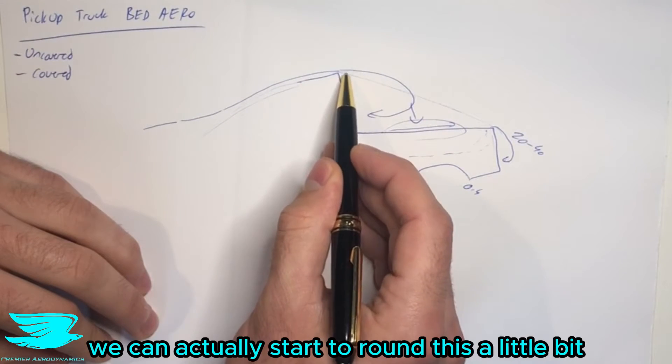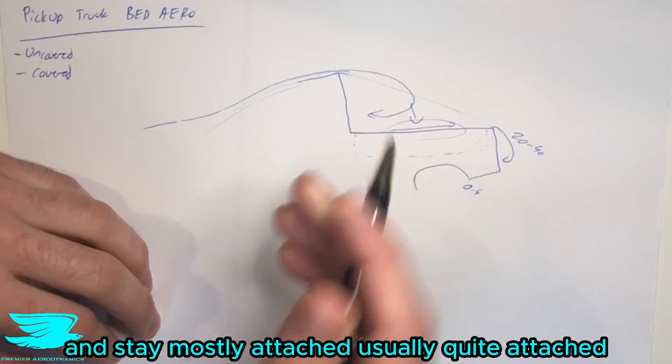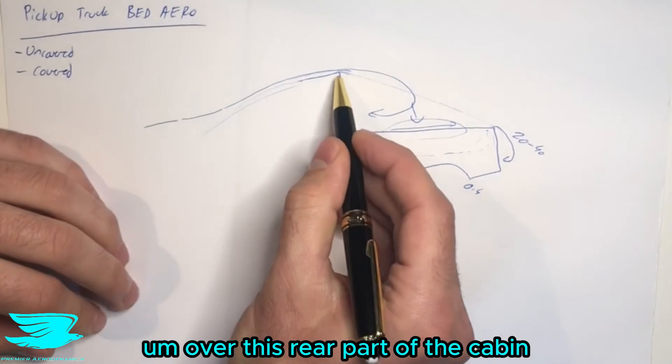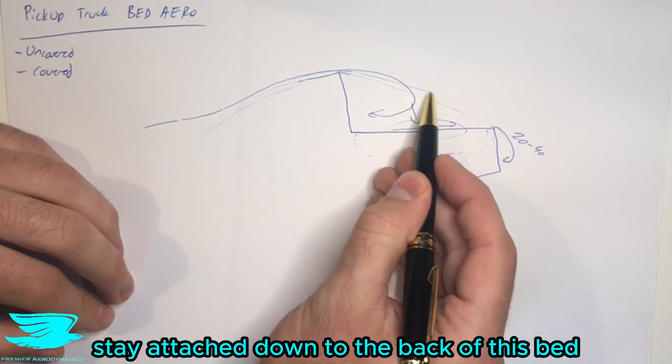And what this does is now, we can actually start to round this a little bit and have the flow come along here and stay mostly attached, usually quite attached, over this rear part of the cabin, stay attached down the back of this bed. And now it's only really going to detach here.